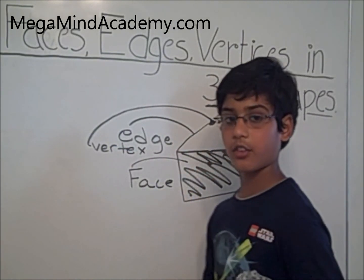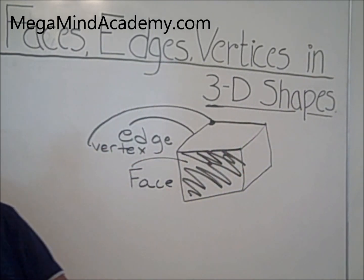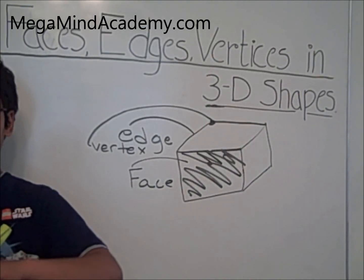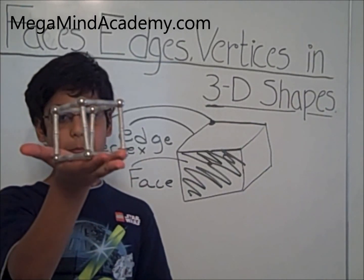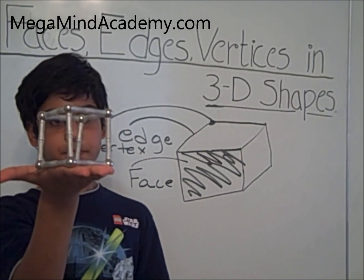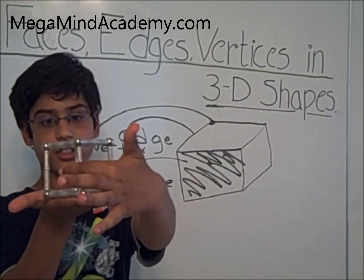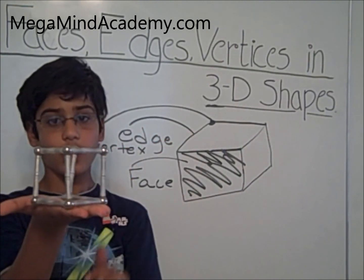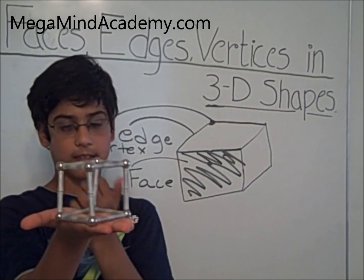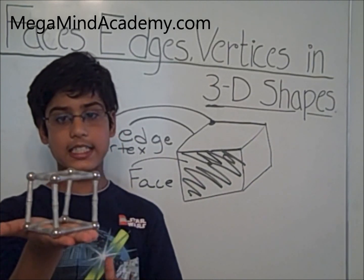Now I have a real 3D cube. Let's count how many faces it has. 4 on the sides: 1, 2, 3, 4. 1 on the top: 5. 1 on the bottom: 6. This cube has 6 faces.